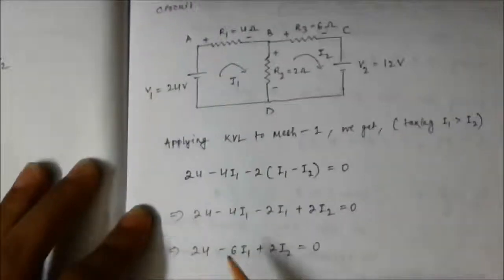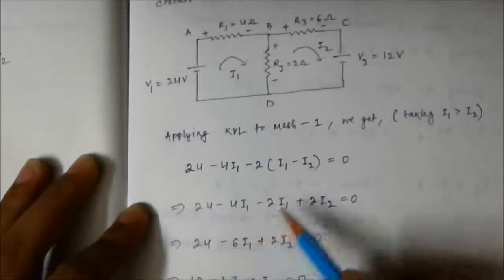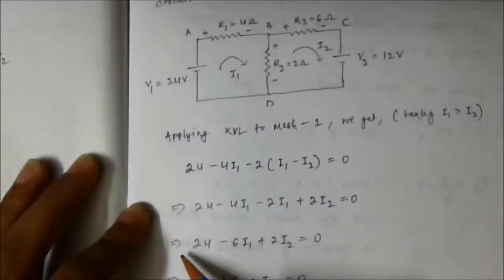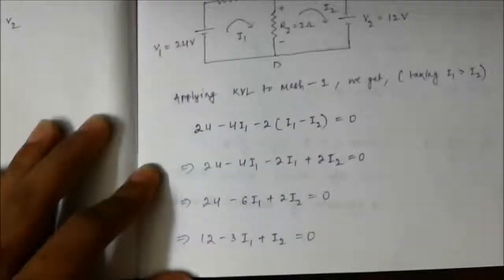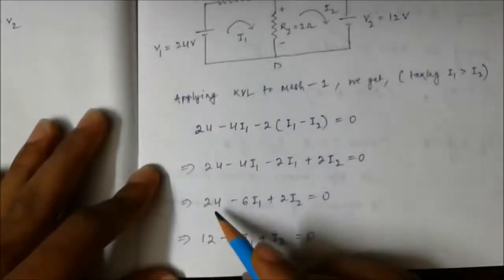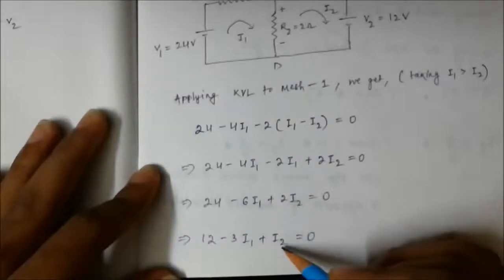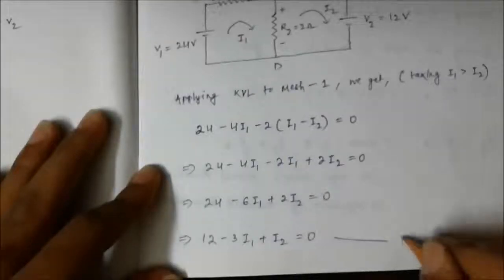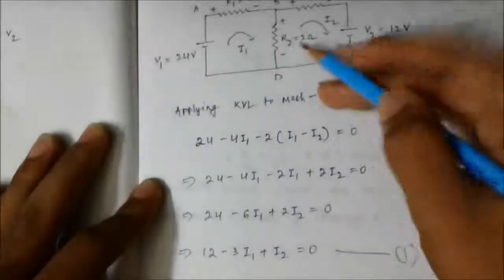Simplifying: 24 minus 4·i1 minus 2·i1 plus 2·i2 equals zero. Adding the i1 terms: 24 minus 6·i1 plus 2·i2 equals zero. Dividing throughout by 2: 12 minus 3·i1 plus i2 equals zero. This is equation one. Another equation will be formed by applying KVL to the second loop.